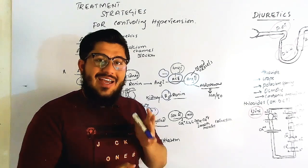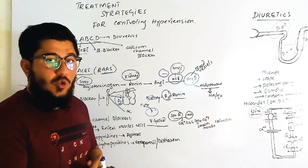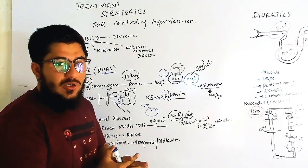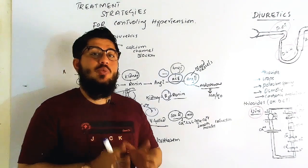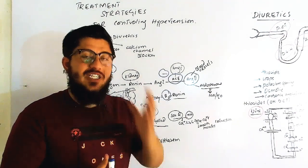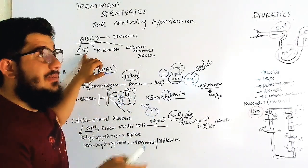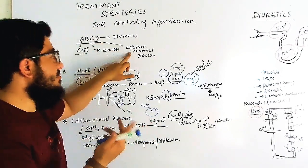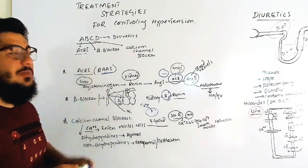Antihypertensives continued. Today's topic is the treatment strategies for controlling hypertension. The pharmacological treatment strategies follow a mnemonic: A, B, C, D. A stands for ACE inhibitors, B for beta blockers, C for calcium channel blockers, and D for diuretics. Let's start with ACE inhibitors.